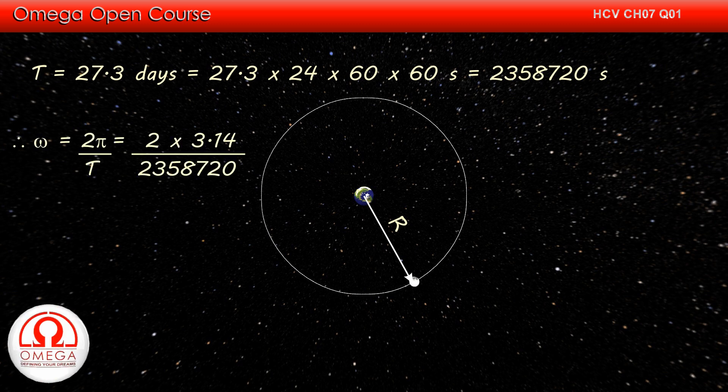Since in one revolution, the Moon travels 2π radian angle, its angular speed is 2π divided by time taken that is 2 into 3.14 divided by 23,58,720 seconds.